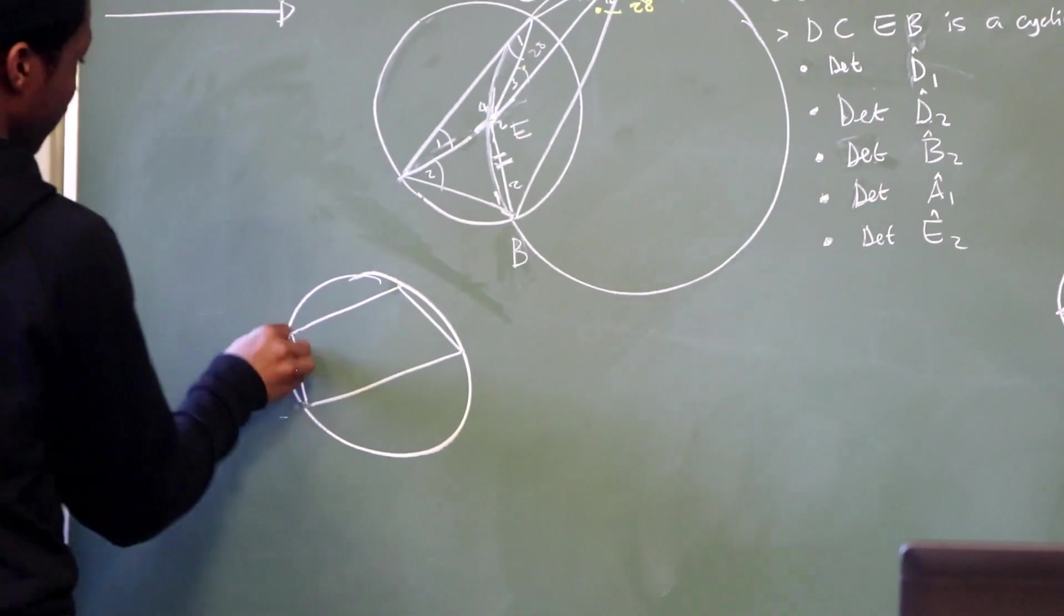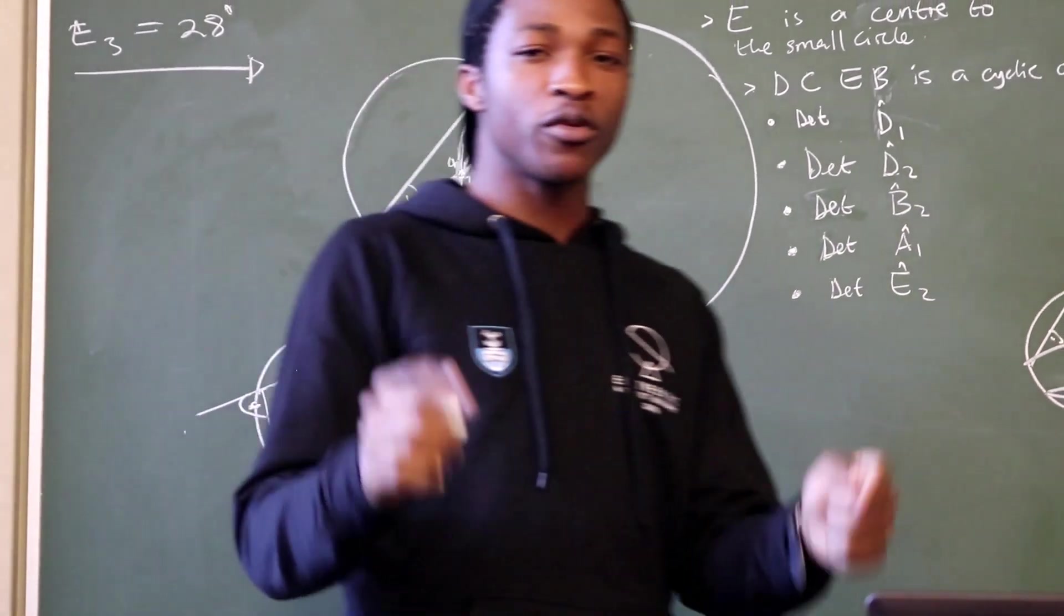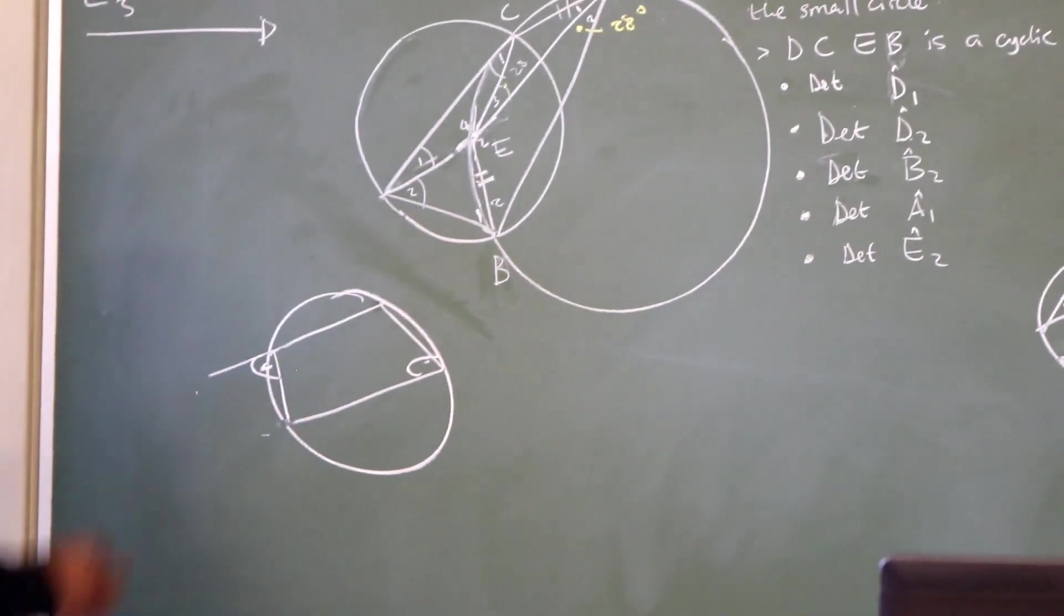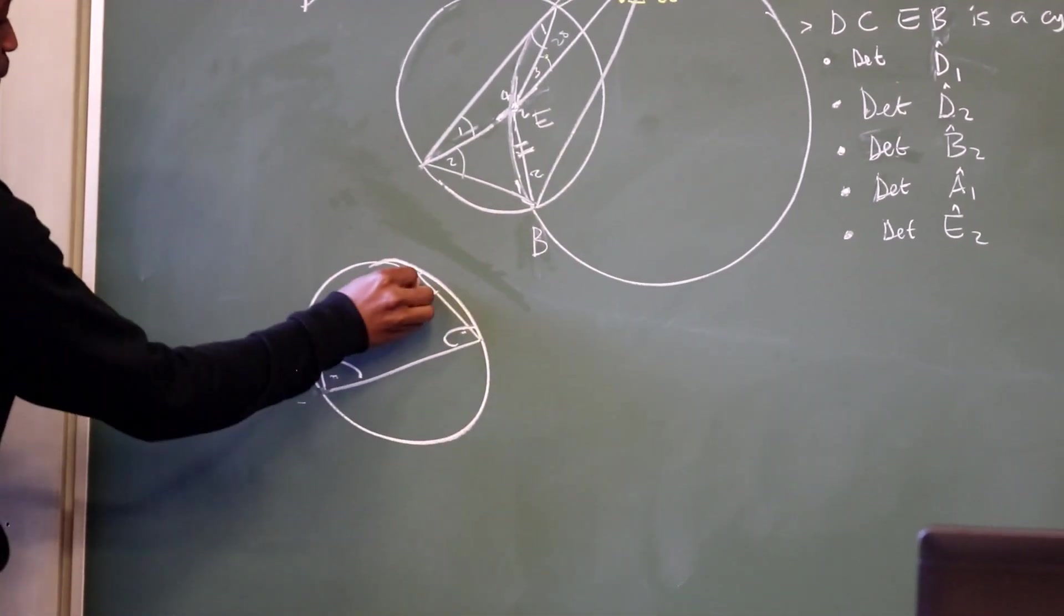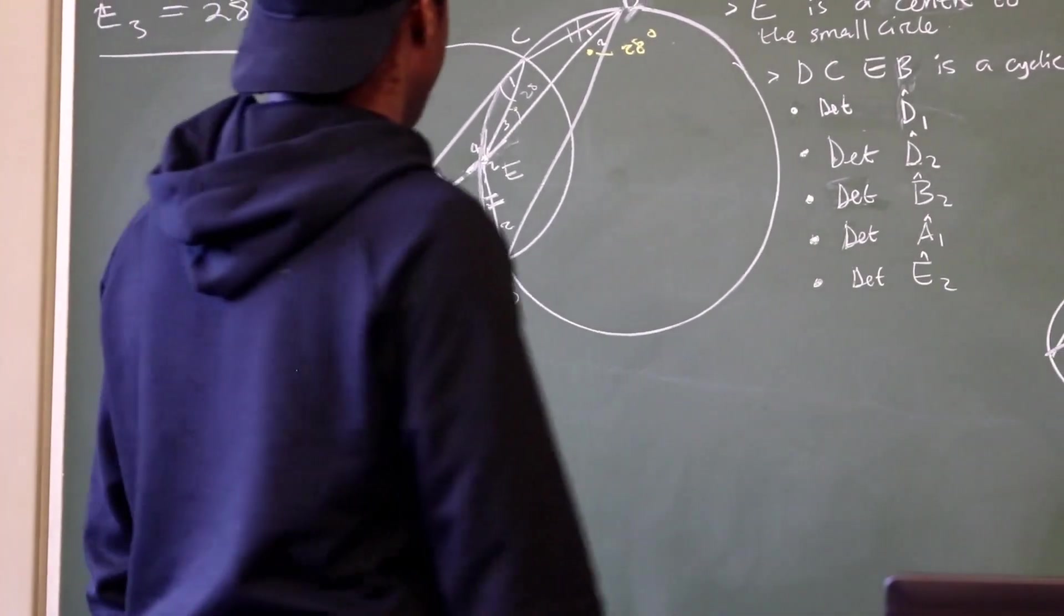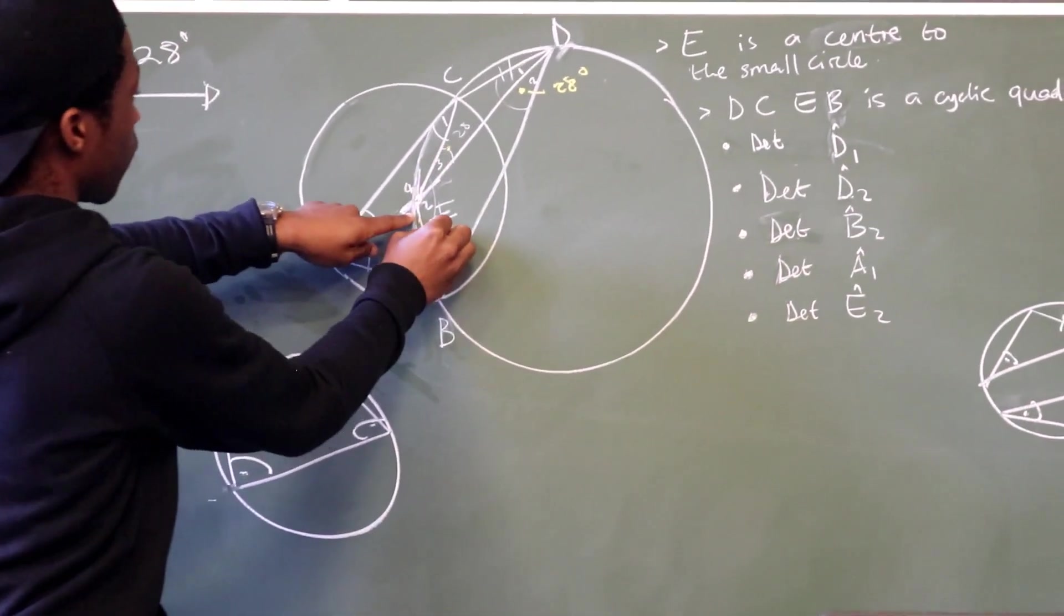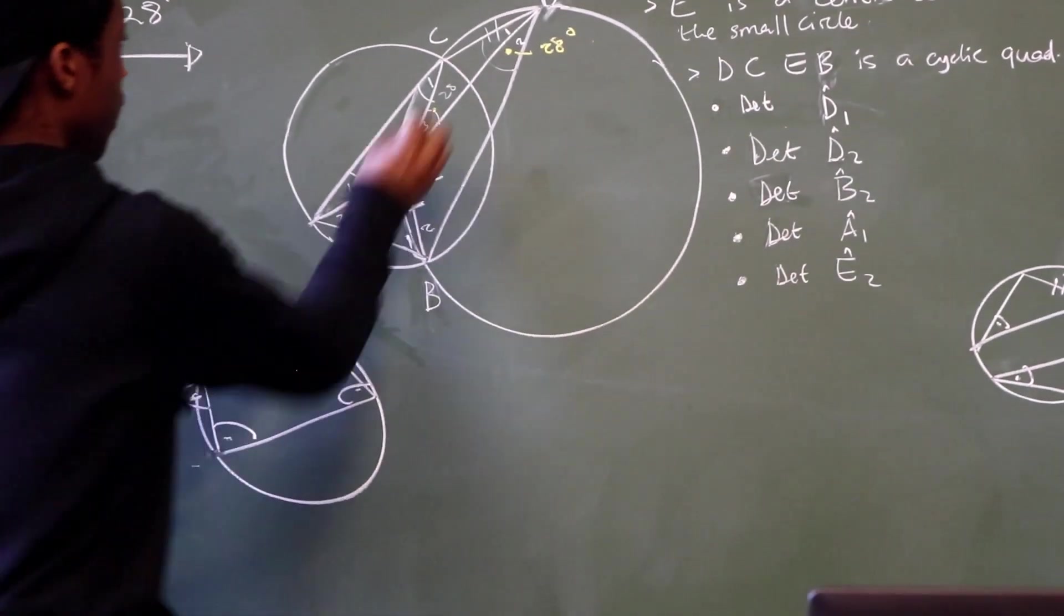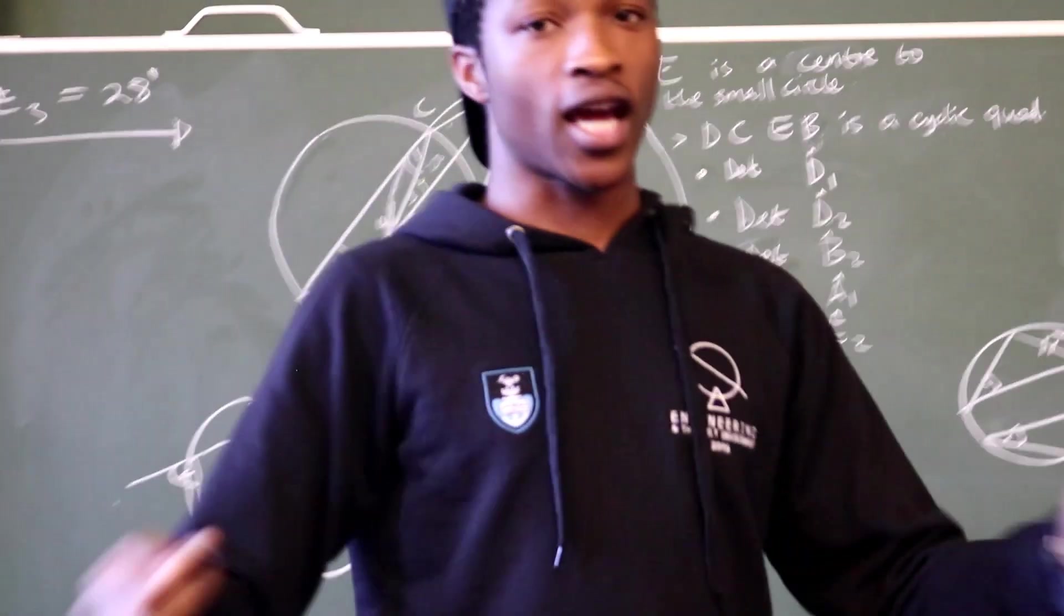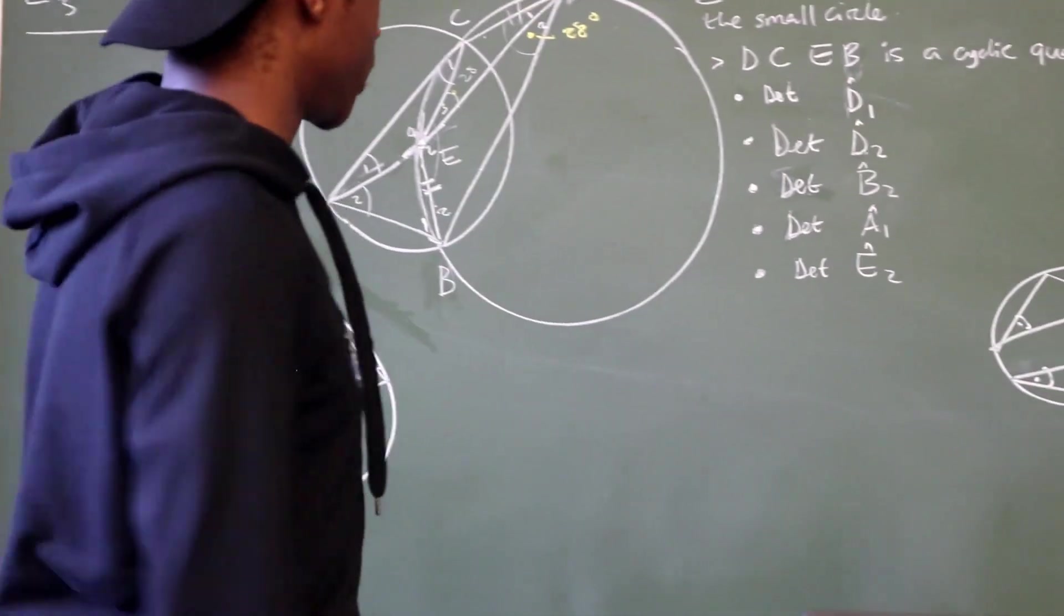Meaning here, this angle is equal to that angle. From there, you know that the two opposite angles of a cyclic quad are supplementary, meaning this angle and this angle are going to add up to 180 degrees.